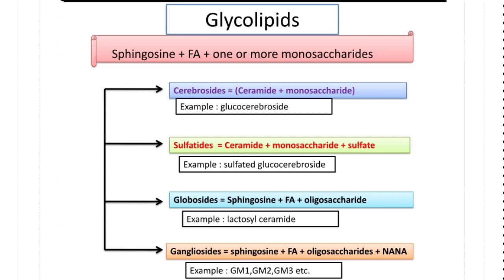Coming to cerebrosides — their composition is ceramide plus monosaccharide, where ceramide means sphingosine plus fatty acid. An example of a cerebroside is glucocerebroside, which contains glucose as the monosaccharide. Coming to the second type of glycolipid, sulfatides — their composition is ceramide plus monosaccharide plus sulfate. Because they contain sulfate, these are known as sulfatides. An example is sulfated glucocerebroside.